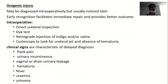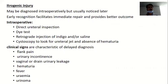Iatrogenic injuries may be diagnosed intraoperatively but can usually be noticed later. Early recognition facilitates immediate repair and provides better outcome. Any missed injury leads to increased rates of complication. Intraoperatively when there is a suspicion of ureteric injury, one should have a very low threshold for complete direct ureteral inspection. Various dye tests by injecting IV indigo carmine and methylene blue can be used to locate the ureteric injury. Retrograde injection of indigo and saline can also help. Cystoscopy to look for the ureteral jet and absence of hematuria can also be used to rule out ureteric injury.